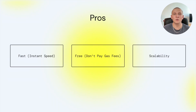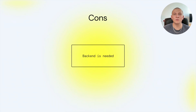The advantages of the off-chain approach are widely known. It is fast for a DAO to make any decision. It is free for members, as they vote without paying gas fees. It also has a positive effect on scalability. The only disadvantage of off-chain voting is that we must partly rely on a backend before the voting is finished.